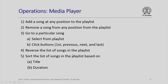The operations typically carried out by the user are: first, add a song at any position to the playlist; second, remove a song you no longer want to listen to; then go to a particular song by selecting it from the playlist or using buttons such as first, previous, next, last, etc. You might also want to reverse the list of songs, or sort them based on either title or duration. All these operations are available in a playlist interface using appropriate buttons.